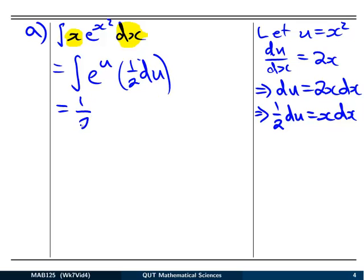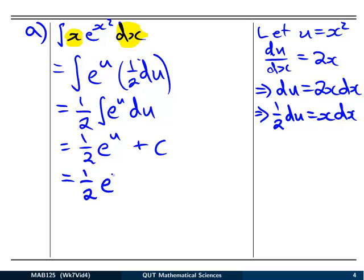Or a half out the front because it's a constant multiple, times the integral of e to the u du. Now we can use our rule for the exponential and say that's a half of e to the u plus a constant. To clean it up, we replace u with its x form, so we have a half e to the x squared plus c. As usual with integrals, you can differentiate that result to check you've got the right answer.